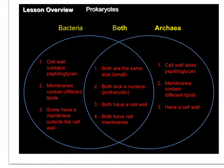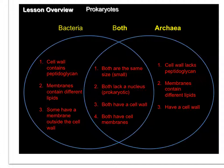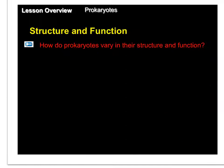If we compare bacteria and archaea in a Venn diagram, both share characteristics: they're the same size, both lack a nucleus, both have a cell wall, and both have cell membranes. But bacteria have cell walls containing peptidoglycan, while archaea lack peptidoglycan. Bacteria have membranes with different types of lipids than archaea, and some bacteria have a cell membrane outside the cell wall, which is not typical of archaea.